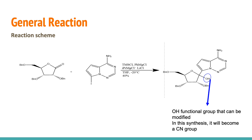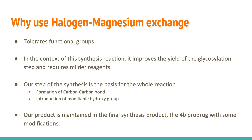Later on in the synthesis, it will be converted to a cyano group. So what is the purpose of employing halogen-magnesium exchange chemistry? First off, it is a relatively new method in chemistry that was founded by Dr. Paul Knochel, and it provides a unique route in terms of synthesizing compounds. One of the most beneficial aspects of this type of chemistry is that it tolerates functional groups. Halogen-magnesium exchange reactions can be used for the preparation of functionalized Grignard reagents containing reactive functional groups.